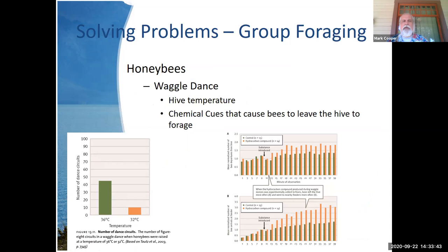The waggle dance has been looked at quite a bit. What they found is that hive temperature during development affects it — the warmer it is, the faster the dance. There are also chemical cues, and several different chemicals are released when foragers come back to recruit more foragers to go out.